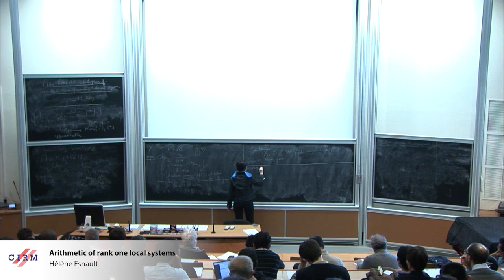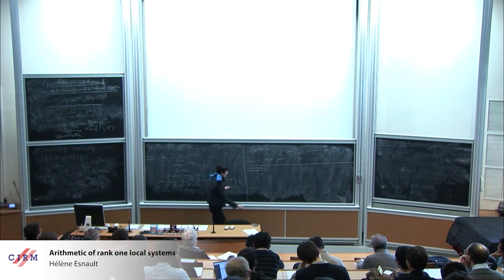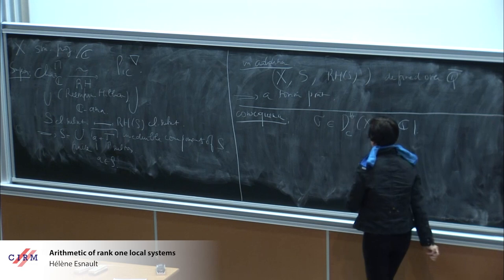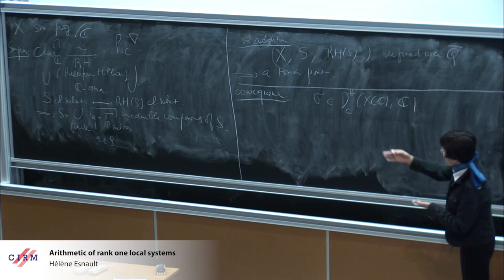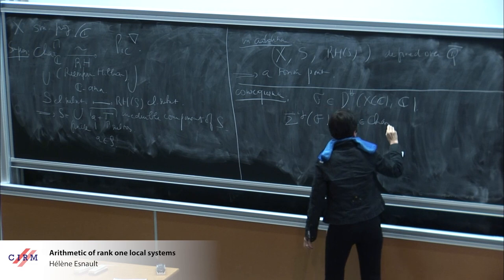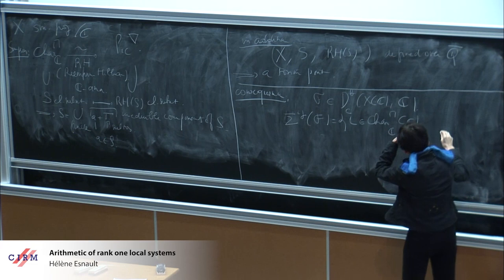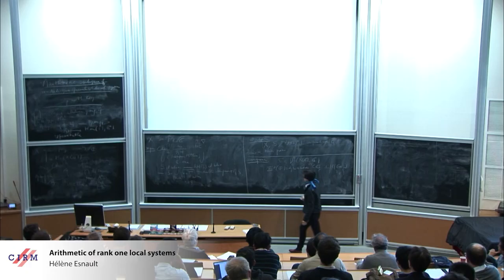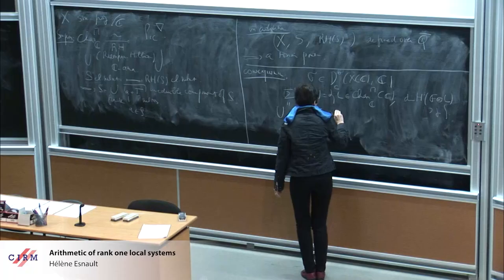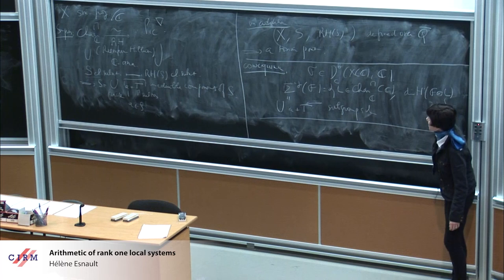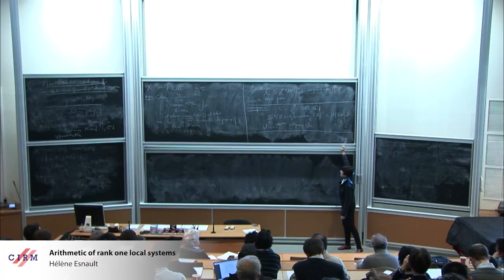One possible consequence is as follows. If we fix a bounded constructible complex F with coefficients, then the jumping loci of F are of this shape. We define the jumping loci as the set of L in the complex points of the character variety such that the dimension of H^i(F ⊗ L) is at least j. This is also a finite union of sets A + T, where T is a subgroup scheme.